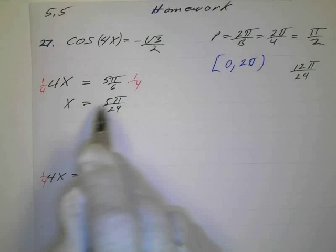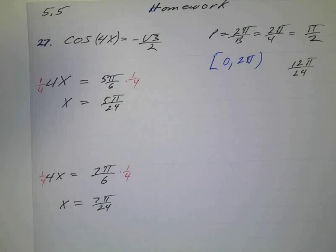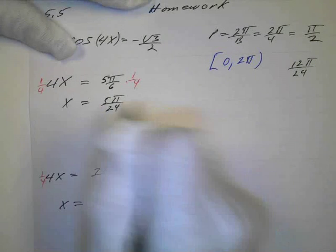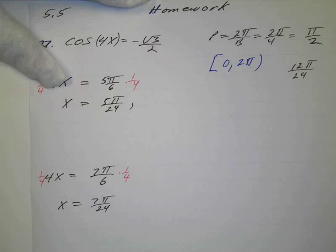Now, 2π would be 24. It would be 48π over 24, right? So I'd have to have 28 on the top. Okay, so first of all, if I add 12 to this, what's 5 plus 12?